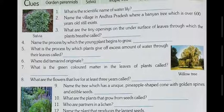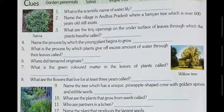Question number five: what is the process by which plants give off excess amount of water through their leaves called? When plants are watered, they only utilize the amount of water needed. The excess water is lost through the plant's body. That process is termed transpiration — T-R-A-N-S-P-I-R-A-T-I-O-N.